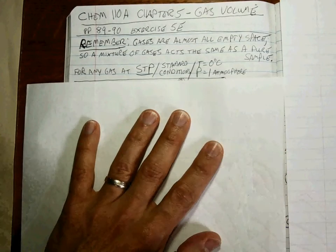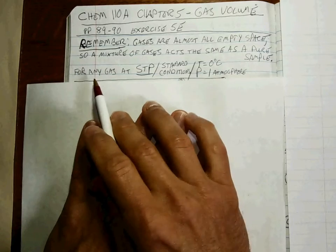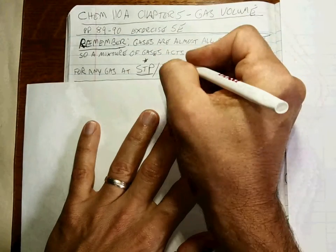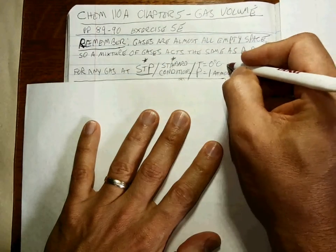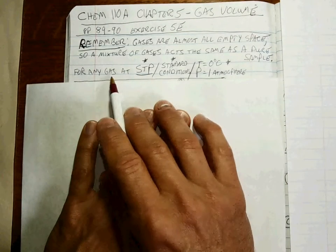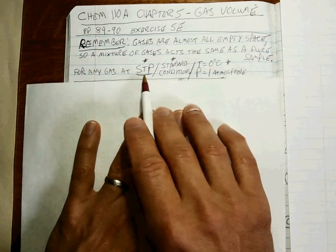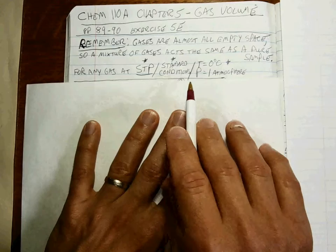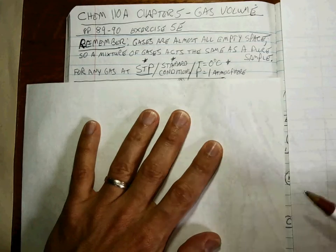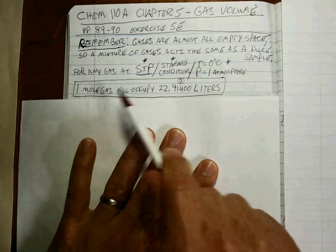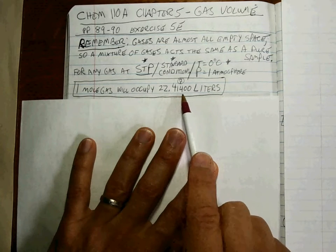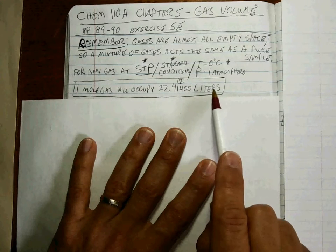We can develop this information, and the big keys are seeing STP, or standard conditions, or these conditions. If you know that you have a gas, or a mixture of gases, at STP — also called standard conditions, or zero degrees Celsius and one atmosphere of pressure — this will always be true: one mole of this gas will occupy 22.41400 liters of volume.